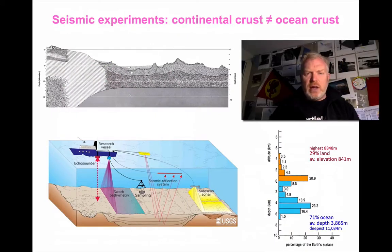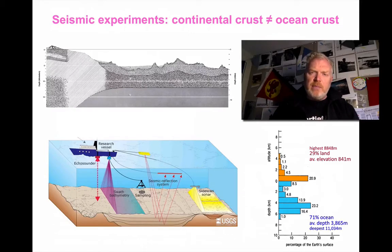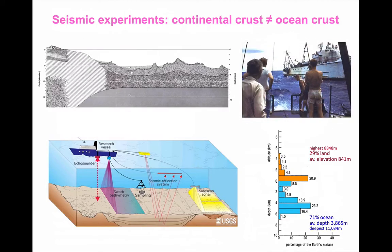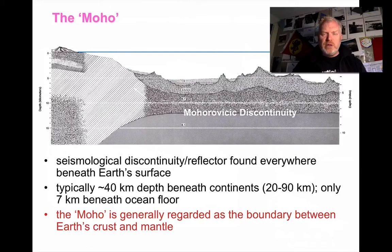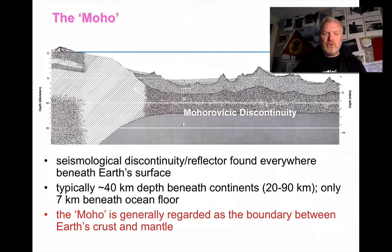Mohorovičić discovered, through seismic evidence, something about the structure of the crust. He discovered that continental crust and oceanic crust are very different — they have different thicknesses, different heights, different densities, different structure. He found that there was a very clear seismic boundary between this crustal material and the mantle beneath. Beneath the continents it can vary from 20 down to about 90 kilometres. Underneath the oceans it's a fairly consistent seven or so kilometres.